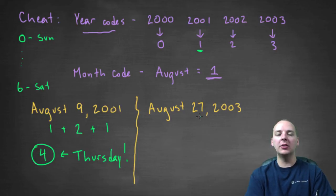Alright, real quickly, let's do August 27th, 2003. Month code of one. The day code, the 27th, so do 27, but modulo seven.